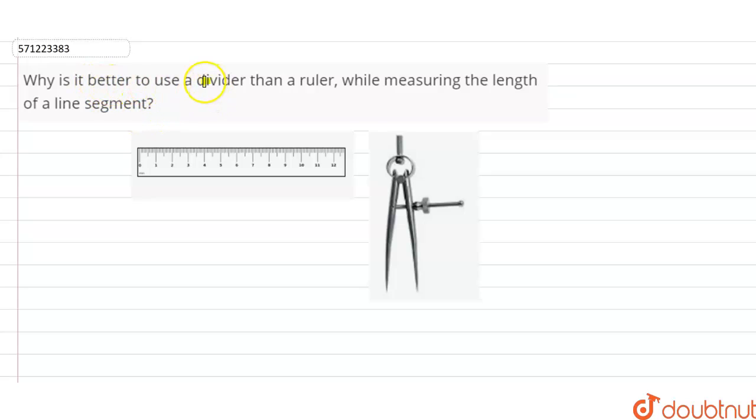When we measure a line segment with a ruler, there may be some error due to its thickness. Also, we may get errors due to angular view if our eyes are not vertically positioned on top of the object.